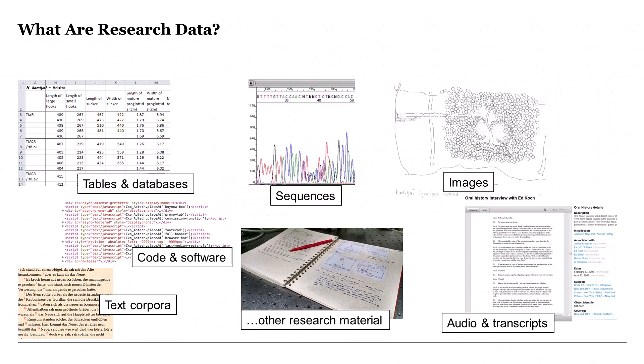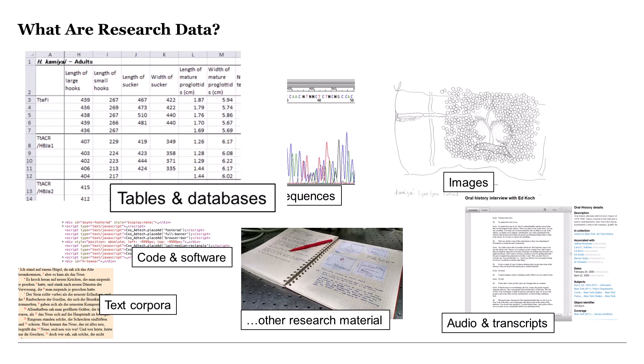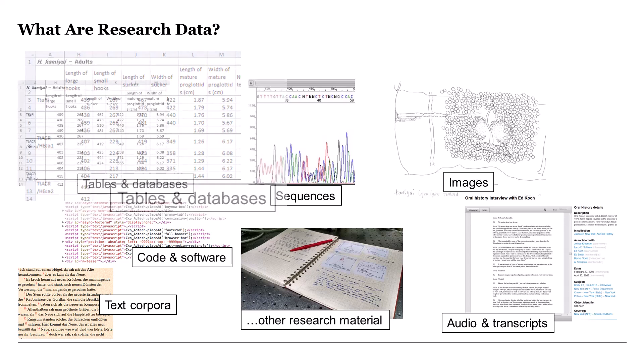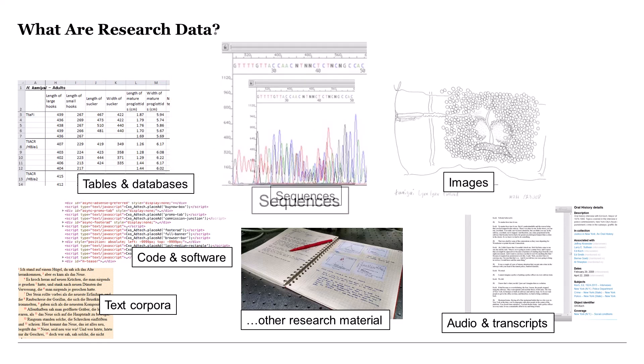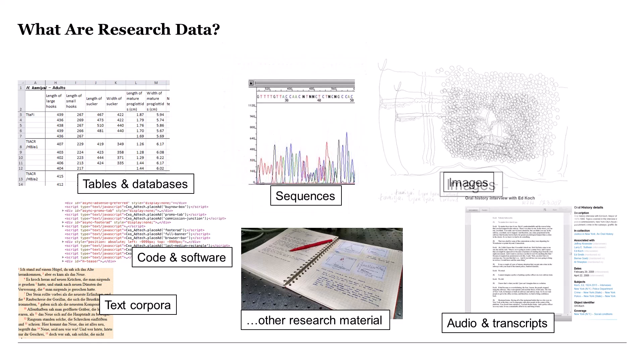First of all, you might ask the question: what is considered as research data, or what is not? Basically, all data that are generated or used during a research process and that are necessary to make the research results traceable are referred to as research data. Research data can include raw or processed data files and tables, gene sequences, models and images.